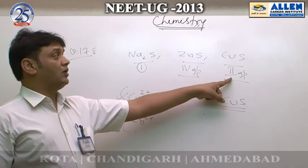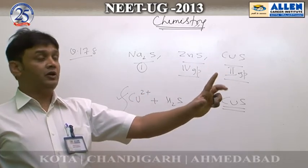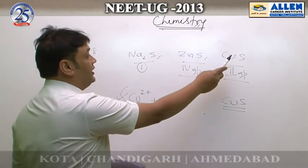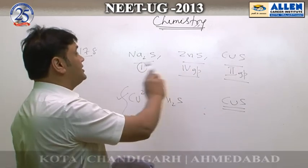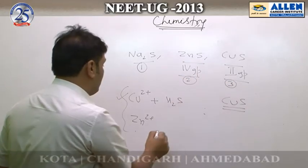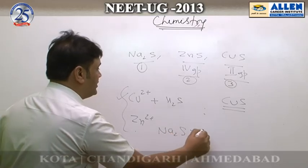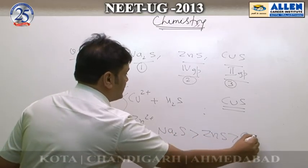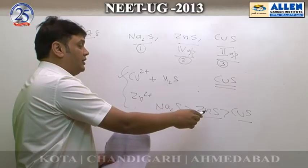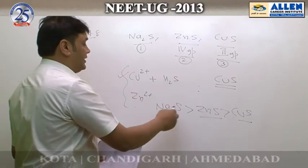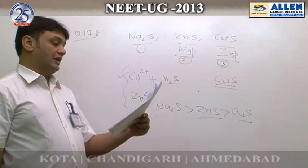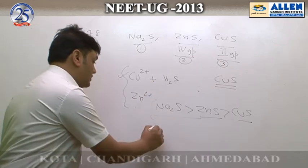Group 2 sulphides are less soluble than group 4 sulphides. Therefore, the least soluble sulphide is CuS and the most soluble is Na₂S. Arranging them in order of solubility: Na₂S > ZnS > CuS. Both ZnS and CuS are insoluble, but in comparison ZnS is more soluble than CuS. The matching option is option 1: Na₂S > ZnS > CuS. So the answer is 1.